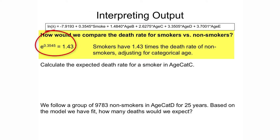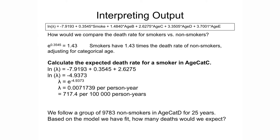Exponentiating gives us a rate ratio of 1.43. Smokers have 1.43 times the death rate of non-smokers, adjusting for categorical age. To calculate the expected death rate for a smoker in age category C, we use the regression equation including the intercept and coefficients for smoke and age category C. This gives us a log rate of negative 4.94. Exponentiating this gives us a rate of 0.007, and multiplying by 100,000 gives an expected death rate of 717.4 per 100,000 person years for smokers in age category C.